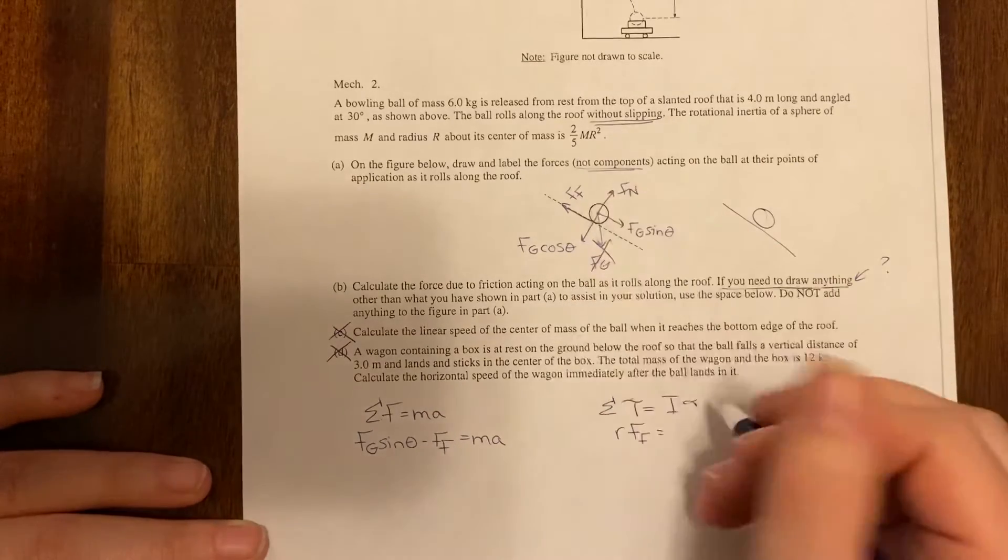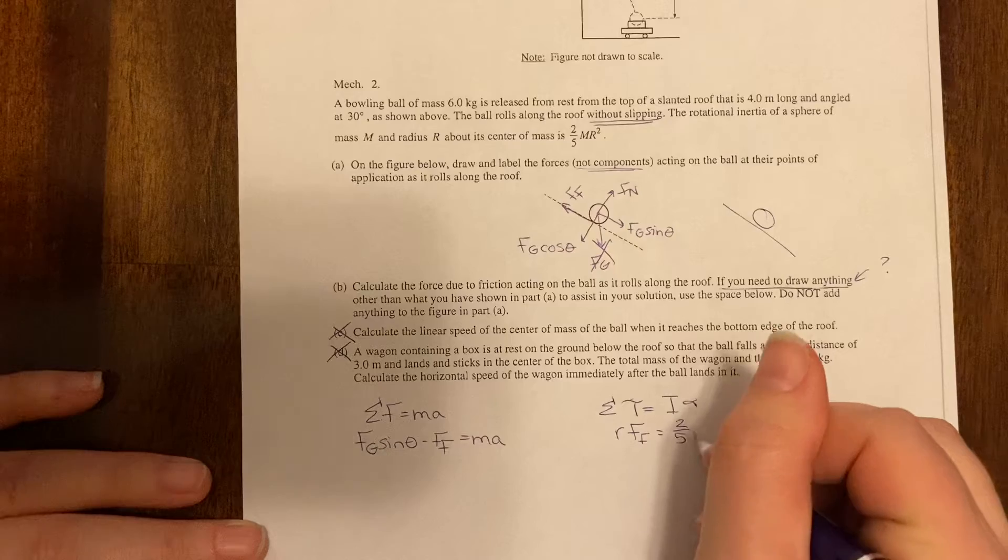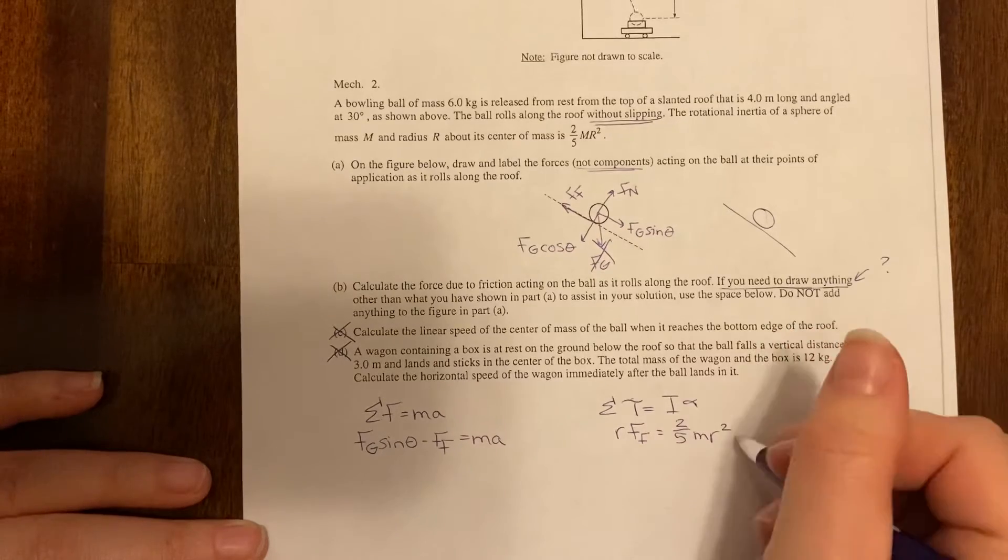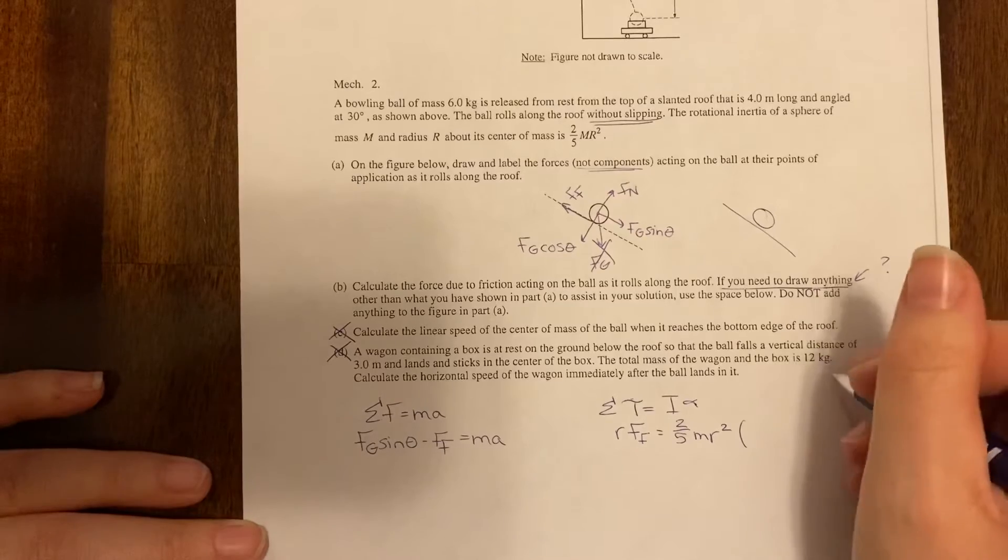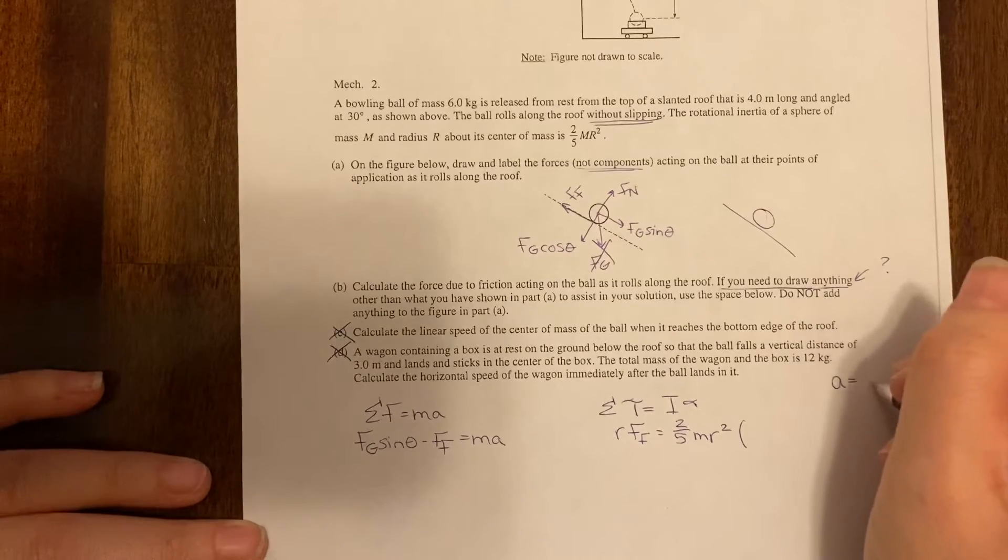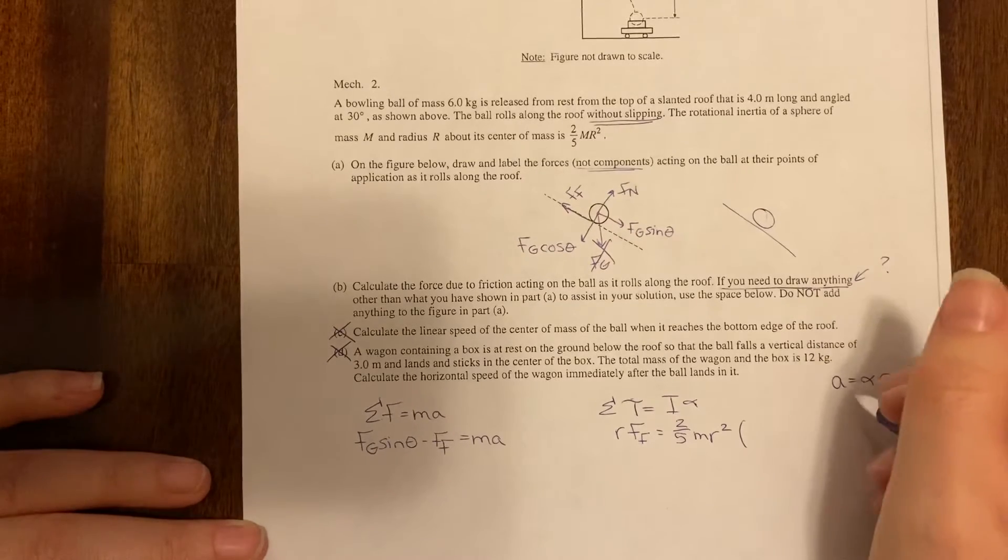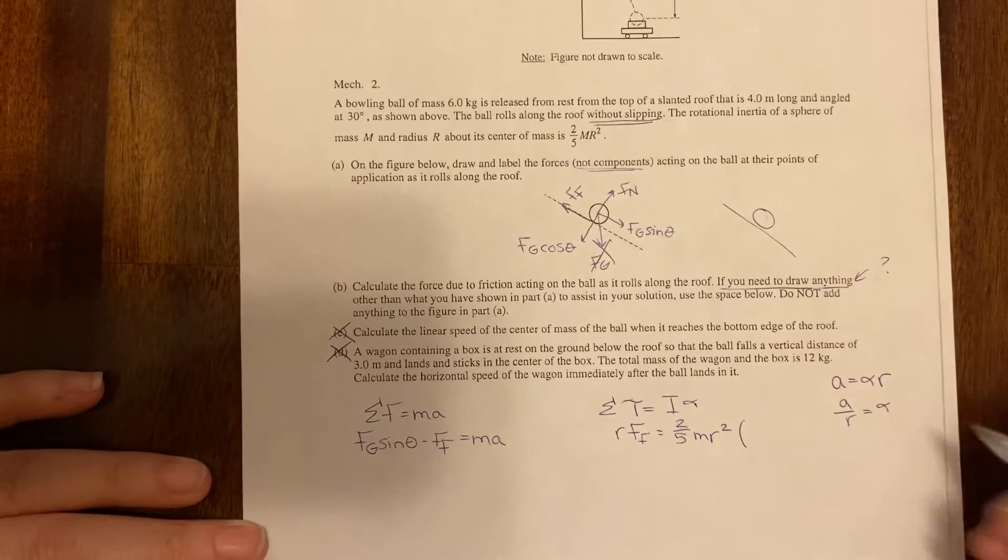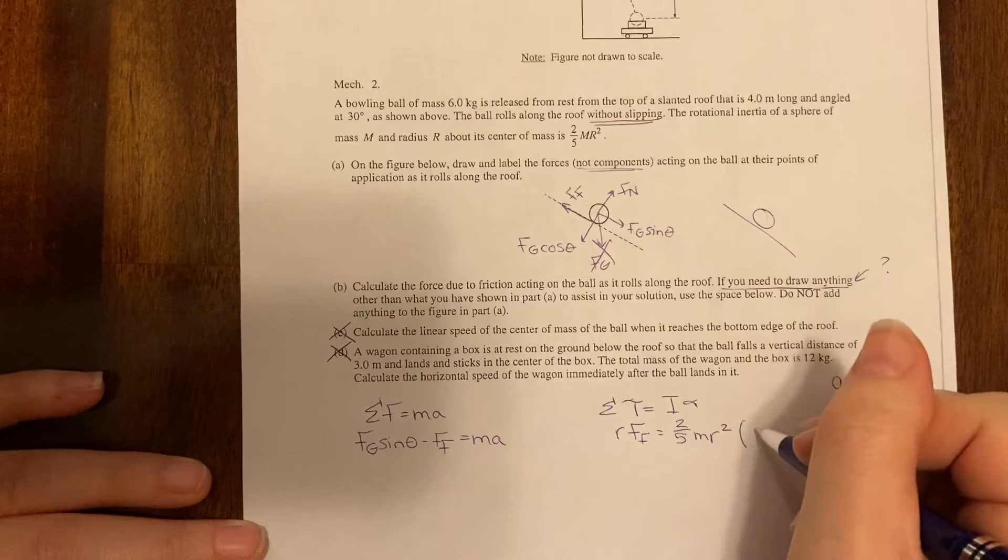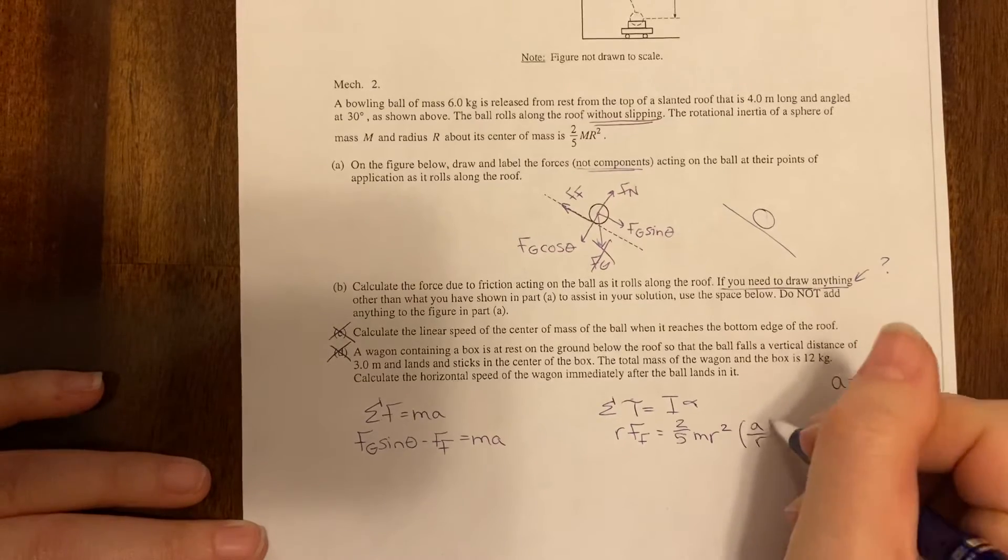Now I is our two-fifths MR squared and then what do we do about the alpha? Hopefully you're saying to yourself well I know that A equals alpha R or A over R is equal to my rotational acceleration. So I'm going to plug in A over R here.